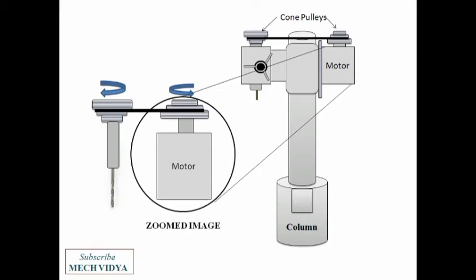What happens is that when the motor spindle rotates, the motion gets transmitted through the cone pulley and the V-belt to the drill spindle. And finally the drill bit in the spindle rotates like this.